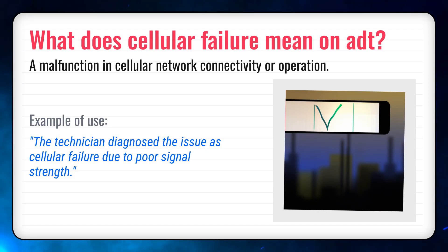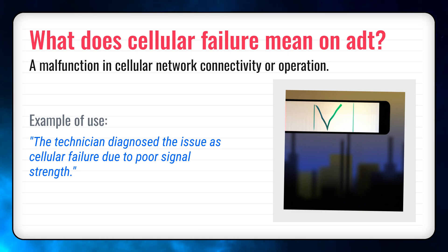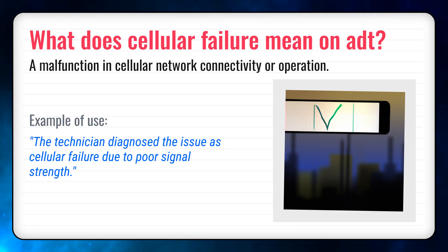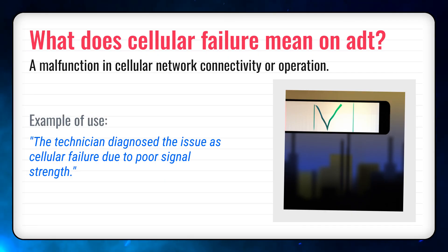Now let's talk about where this word comes from — origin stories can be fascinating. Cellular failure traces back to the term cellular, used in telecommunications since the 1940s, describing how networks are divided into cells. Over time, it's been used by engineers and technicians working on mobile networks. The word has carried through history and still shows up today in surprising ways.